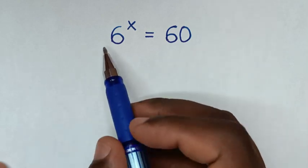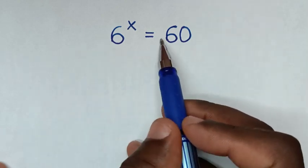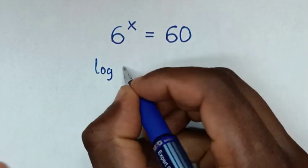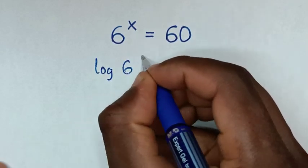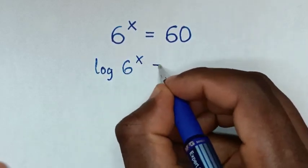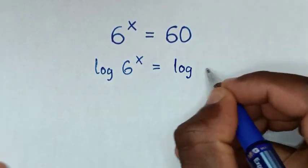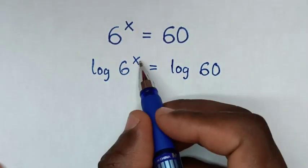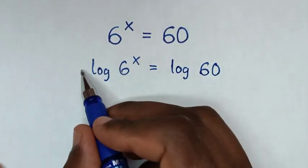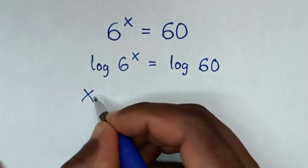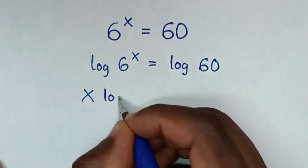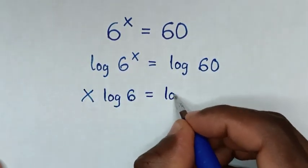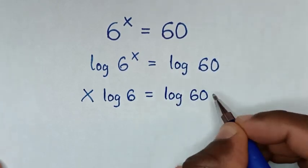In the first step, we'll apply log on both sides. So it will be log of 6 power of x is equal to log of 60. Then this power of x will move to the base, so it will be x times log of 6 is equal to log of 60.